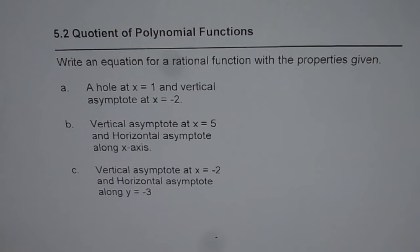Let us explore further how to write equations for rational functions from given conditions. 5.2 quotient of polynomial functions. Write an equation for a rational function with the properties given. Three examples for us to study.